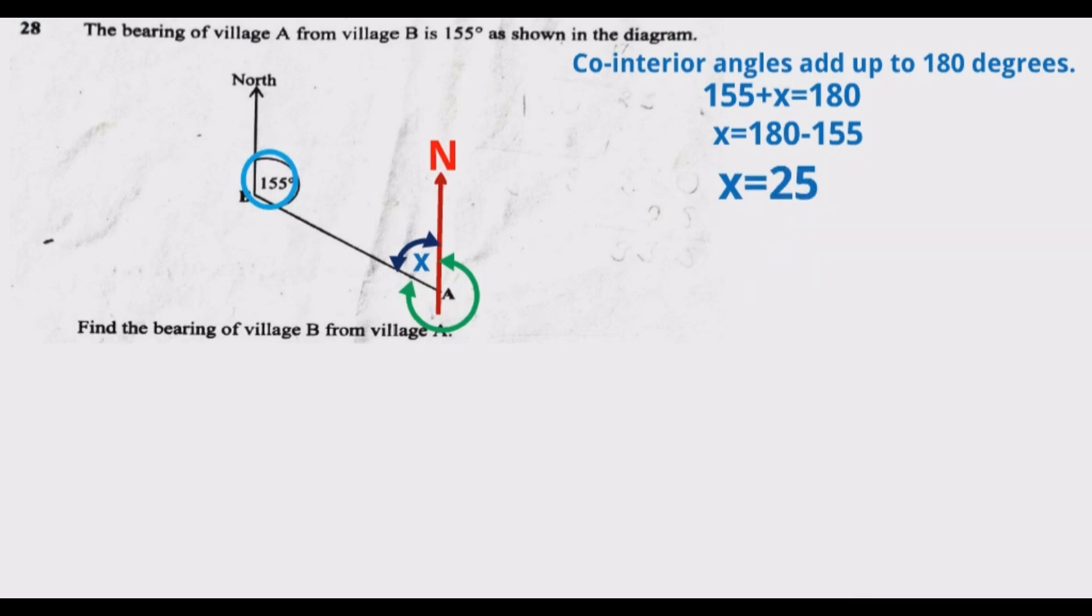Now once we have found the value of x there, I can remove x and put 25 degrees there. Once we have found the value of the bearing there, then we can find the value of this bearing which we want to find.